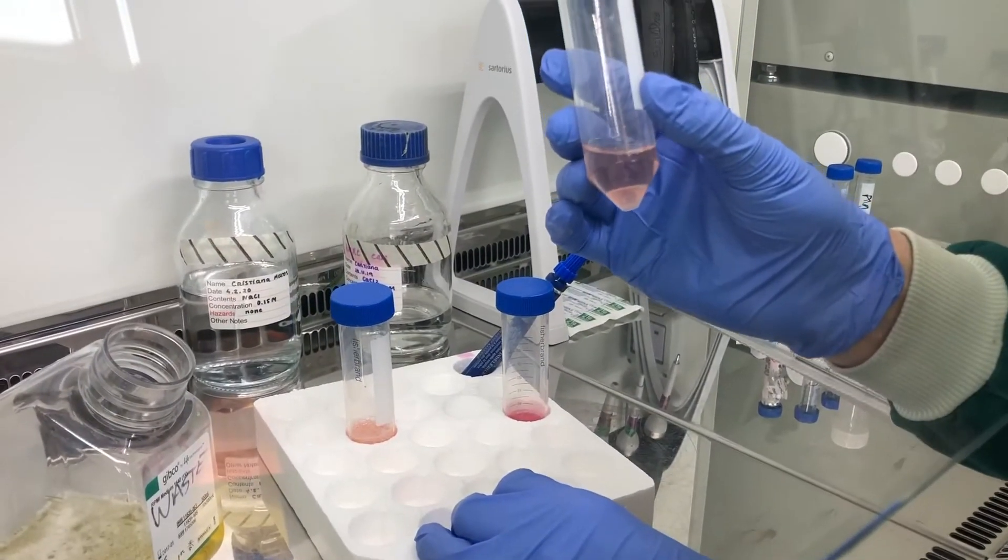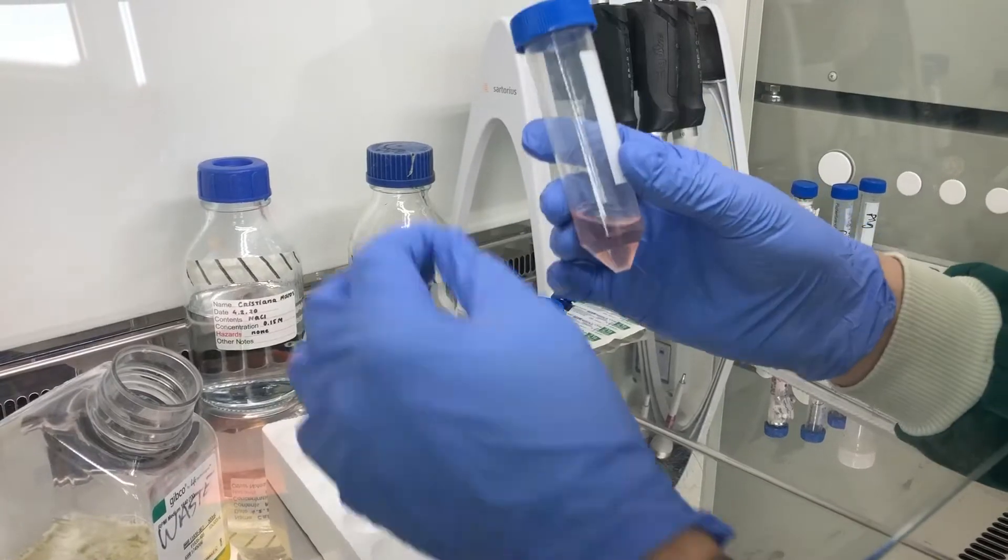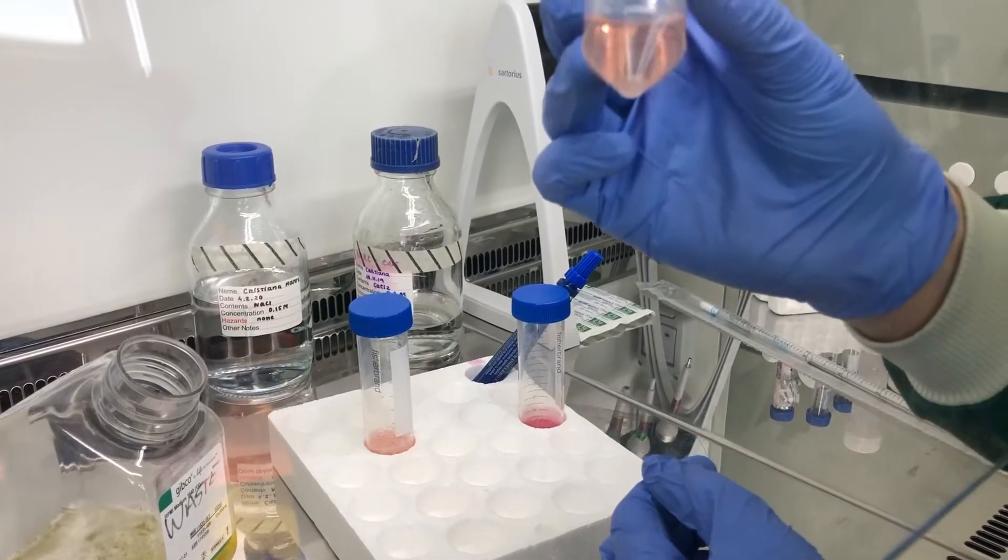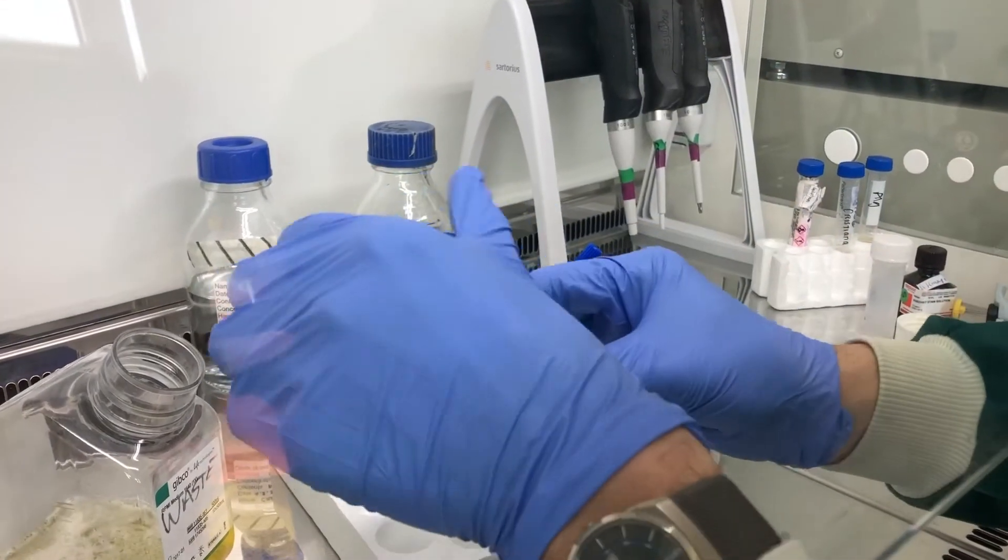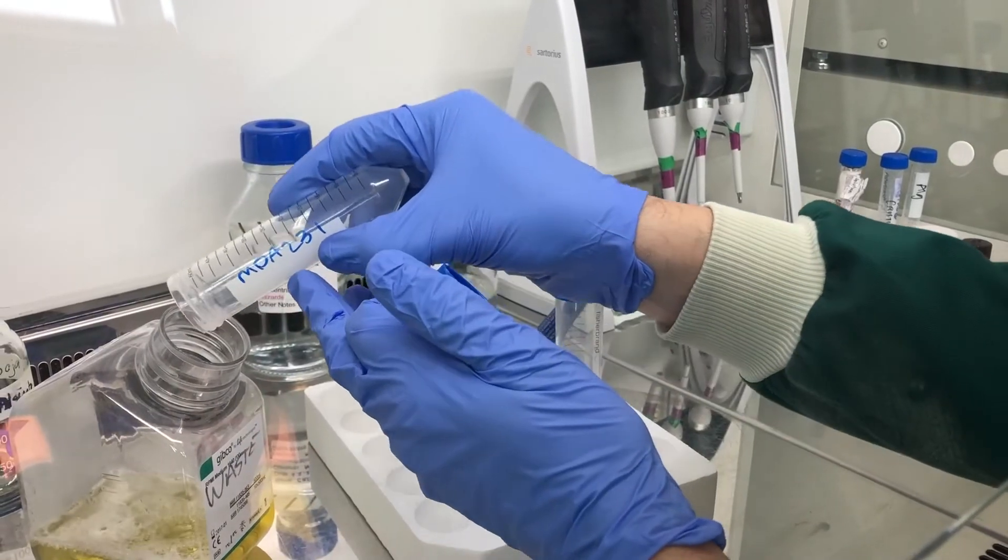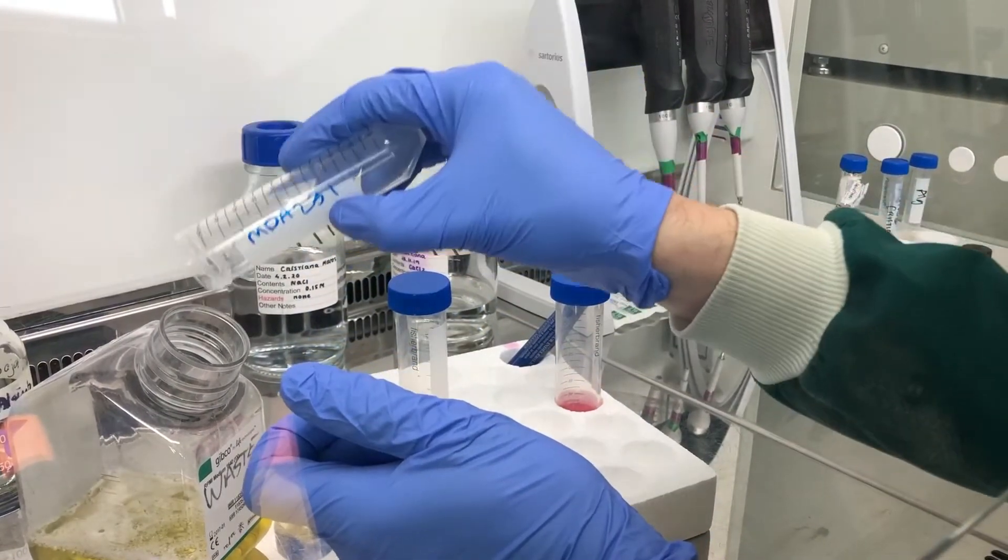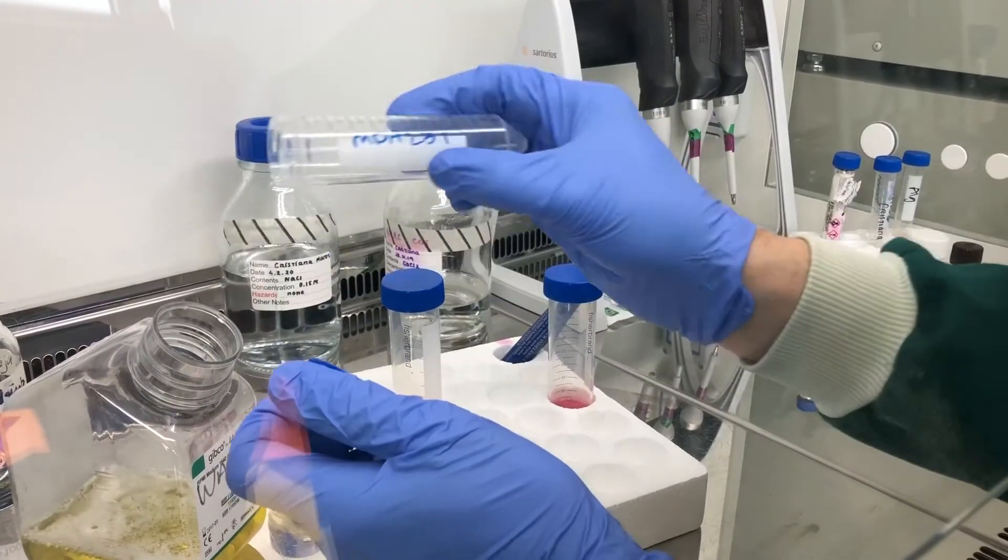Okay, so we've got probably a million and a half cells in there. You can see a little pellet in the bottom. So first, just pour off the medium. You want to get all the medium off the cells.